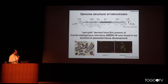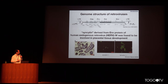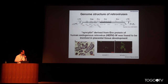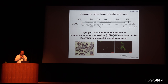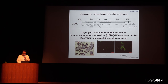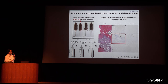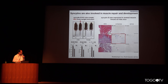The most famous example is called syncytin. Syncytin, derived from the envelope protein of human endogenous retrovirus HERV-W, was found to be involved in placental tissue development. It is actually an essential gene for developing syncytiotrophoblast cells, used in the cell-cell fusion process to make special tissues during placental development. Syncytin has also been found to be involved in muscle development.